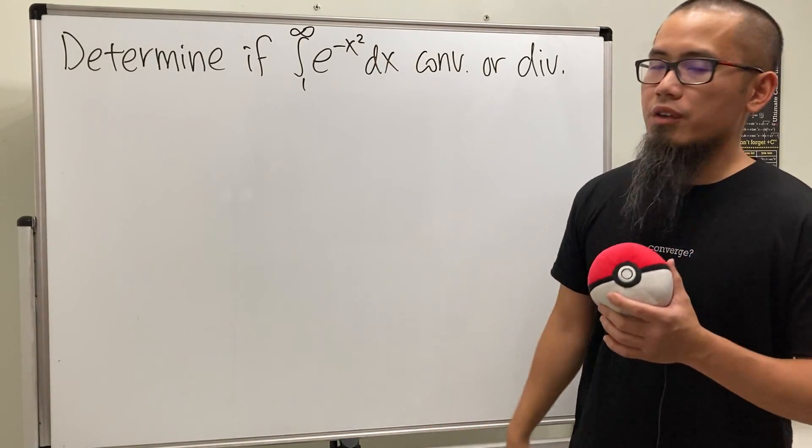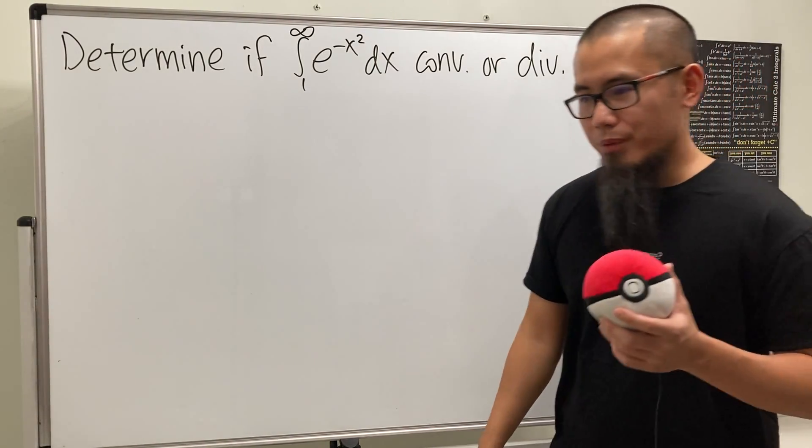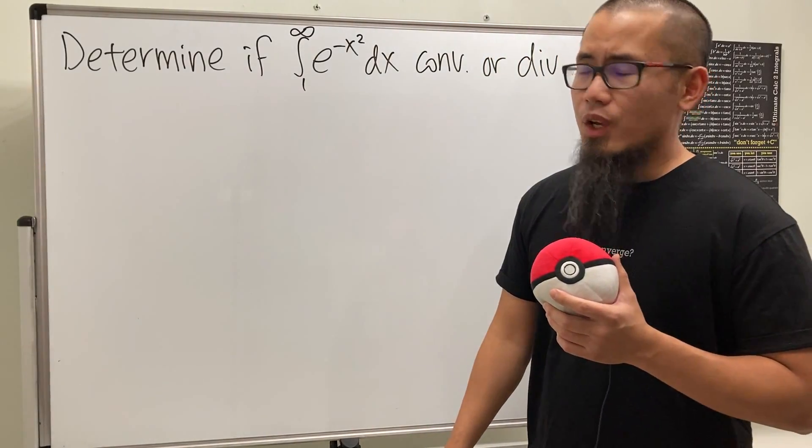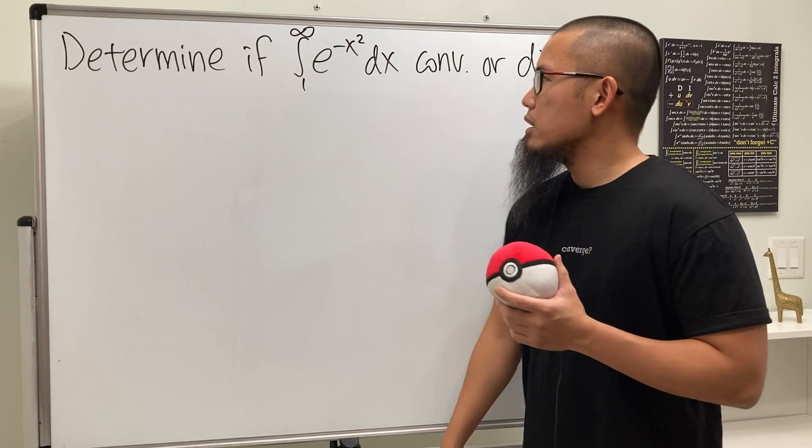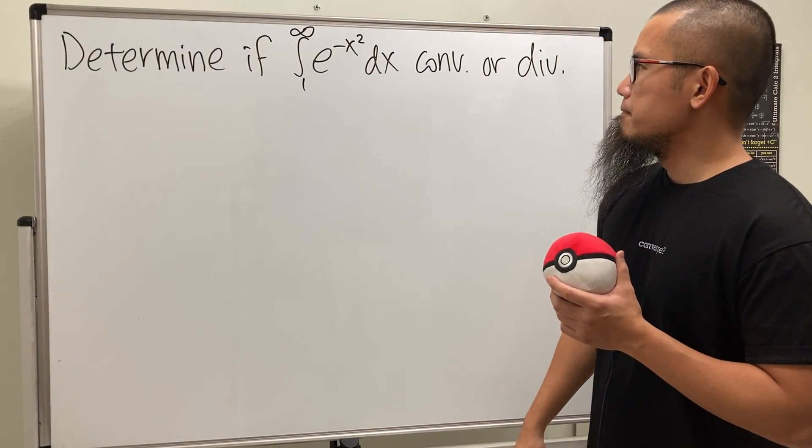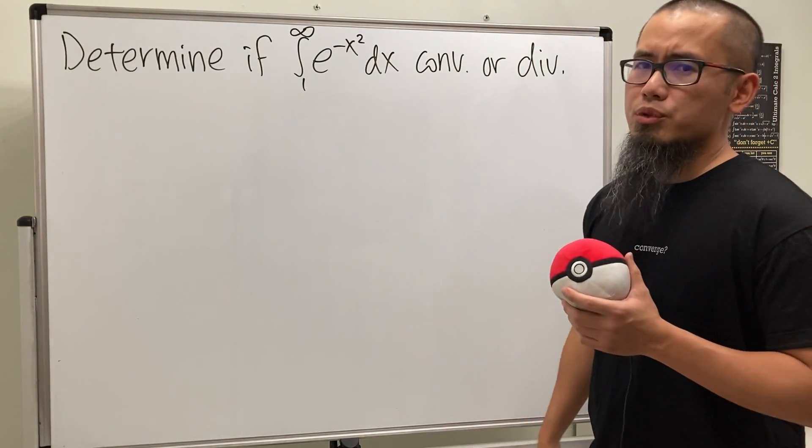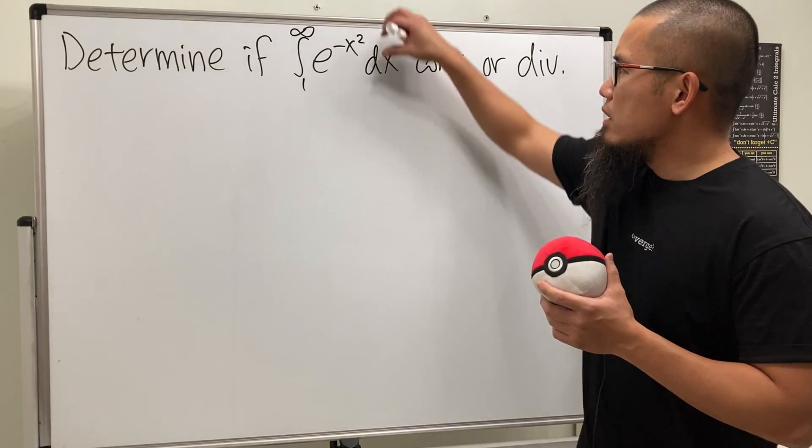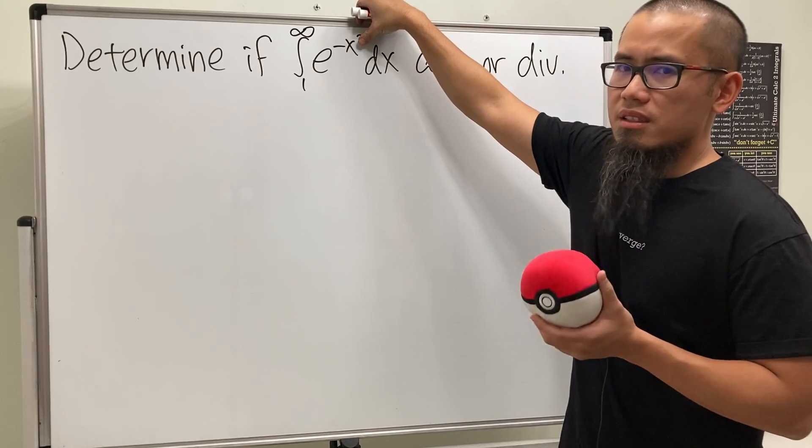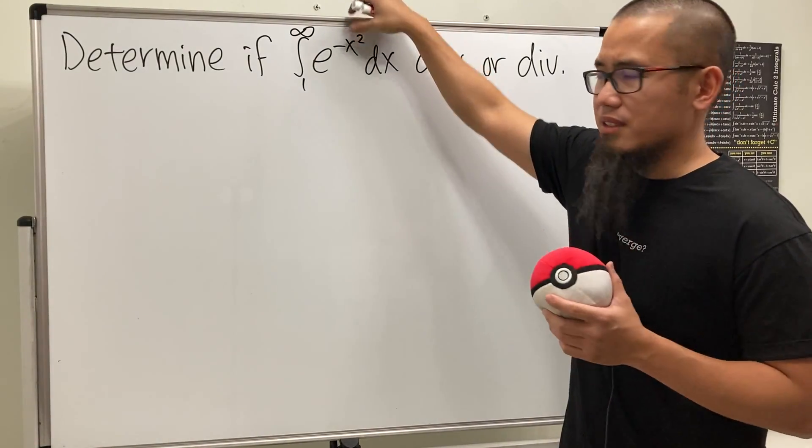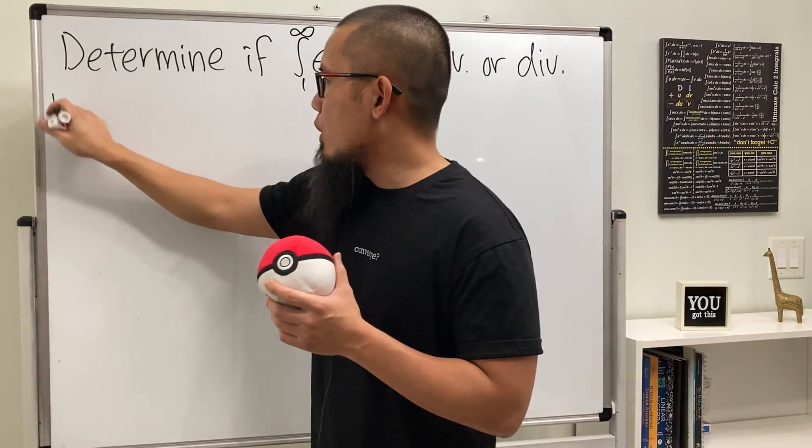But how do we know if this converges? Comparison theorem, which says what? We will have to first come up with something that we know much better. And the way to do it is, this is not elementary, I cannot integrate that. But wouldn't it be nice if we don't have the two right here? e to the negative x is much easier to integrate. So let's go ahead and put down what we know.